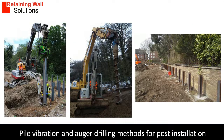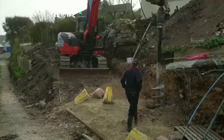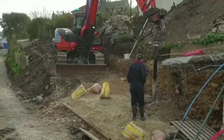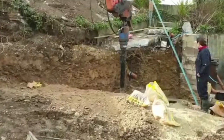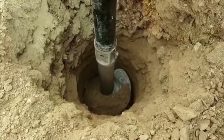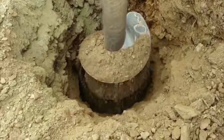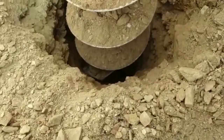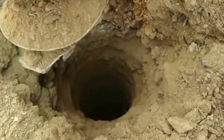vibrated or bored. Once all the posts are installed, the panels are dropped into the channels of the steel posts. The technique for installing the posts is either to drive them or to vibrate them into the ground. If they are going to be vibrated, the ground needs to be suitable for vibration. Alternatively, the posts can be drilled out using an auger. The posts are put into the holes and then concreted in. In all cases, a piling contractor is recommended to carry out the post installation work.